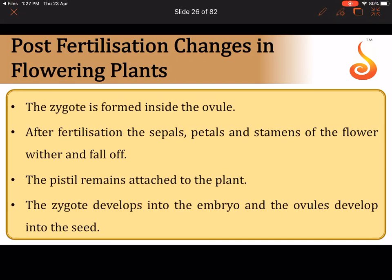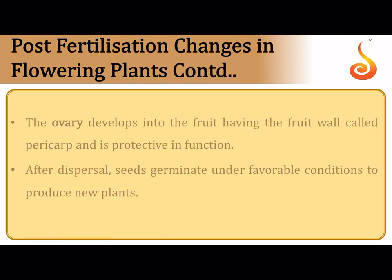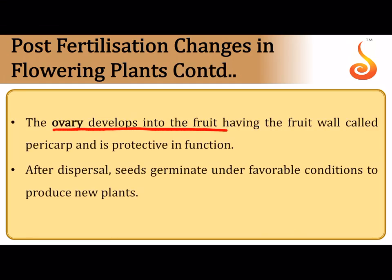In flowering plants, after the zygote is formed, it is present inside the ovule. The ovule develops into the seed with the developing embryo inside. The ovary wall becomes the pericarp — the fruit wall — which protects the seed inside. Once the seed germinates under favorable conditions, it grows into a new plant.